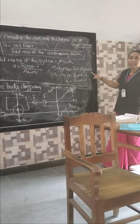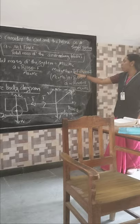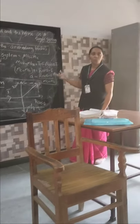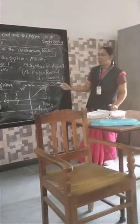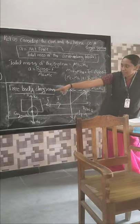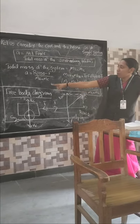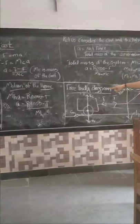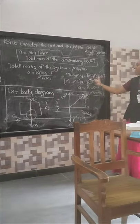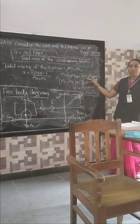For the horse, R cos theta minus C. So we should add and combine both. Force of the cart is T minus F. Force of the horse is R cos theta minus C. And just combine these two. I am getting the net force.